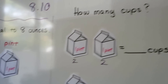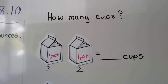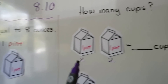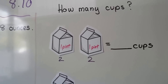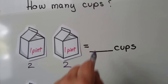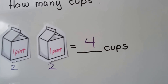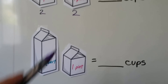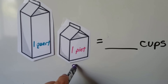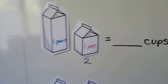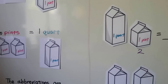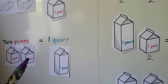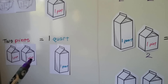So let's see if we can figure out how many cups are here. We know that two cups makes one pint, so that would be two cups. That would be four cups. We know one pint is two cups. How many cups are in a quart? If that's two cups and that's two cups, then together that makes four cups.